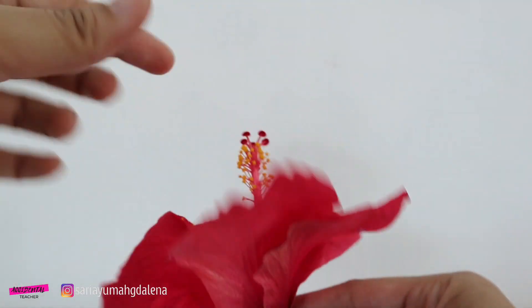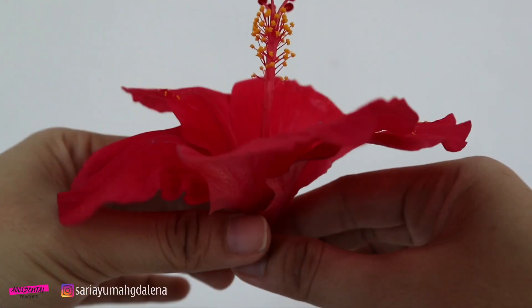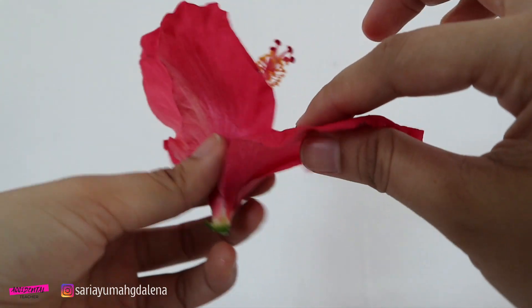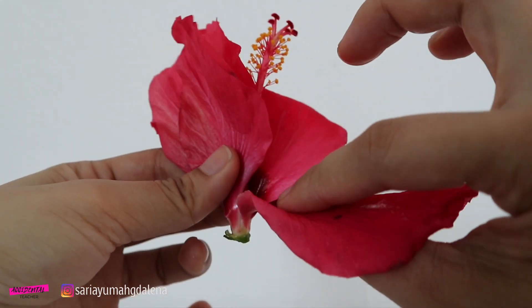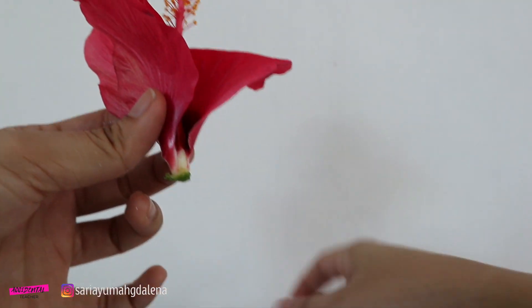After the sepals, then we can take out the petals one by one. We need to do it carefully in order the ovary to be seen clearly.